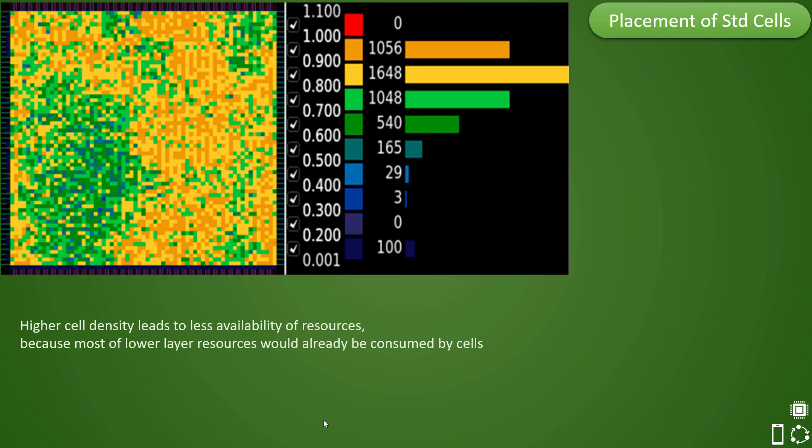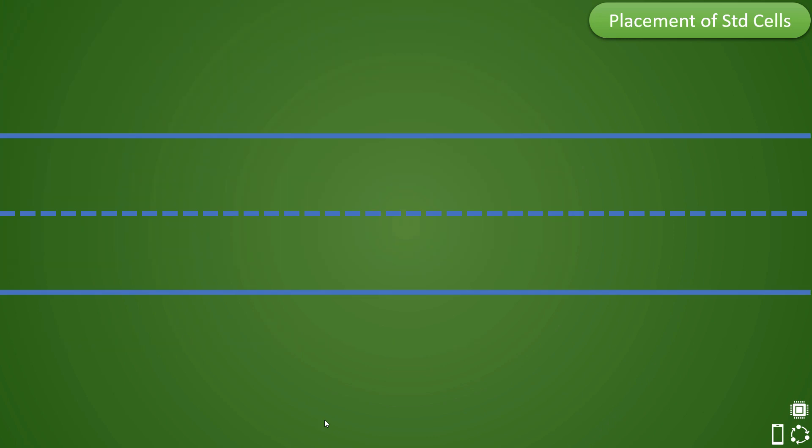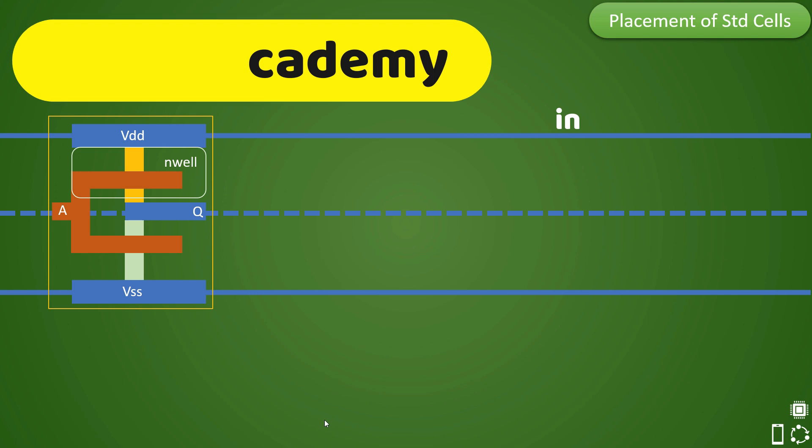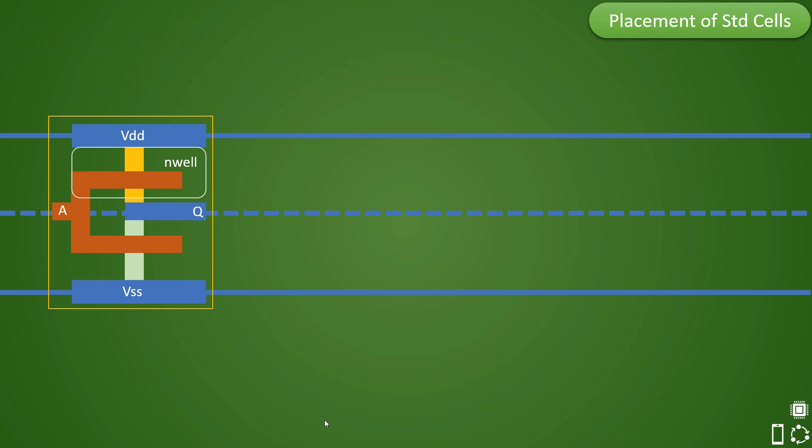This point is very important to understand and now let us see standard cell layout first. These are the side rows where the cells will be placed and dotted line represents the track. In this layout, pin A and Q are visible to router for hooking up the signal from there onwards for routing and rest of the layout is inside the standard cell which would have consumed some of the lower routing resources.